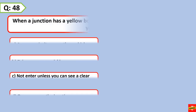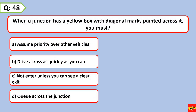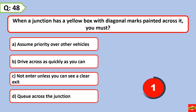When a junction has a yellow box with diagonal marks painted across it, you must not enter unless you can see a clear exit.